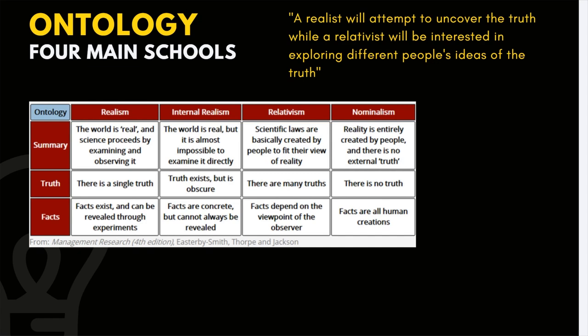Moving along the spectrum toward nominalism is internal realism. How does it differ from realism? The world is real, but it is almost impossible to examine it directly. It recognizes that the world is real but it is impossible to really comprehend it. For an internal realist, the truth exists but it's not really clear — it's obscure. And for facts, facts are concrete but cannot always be revealed. There are times when the facts are hard to be revealed, unlike the extreme realist for whom facts exist and can be uncovered.